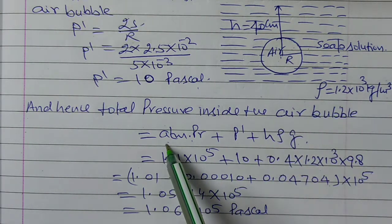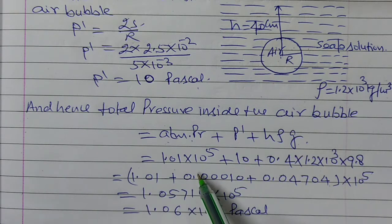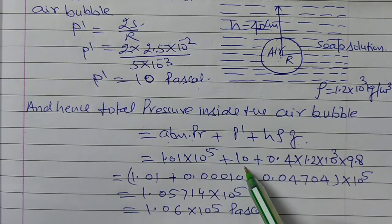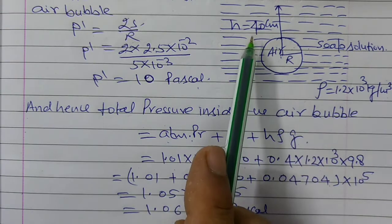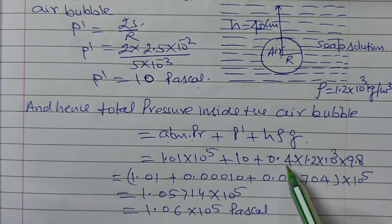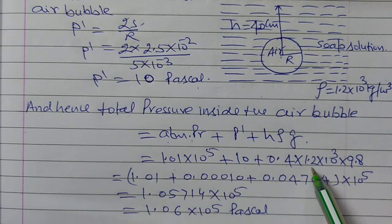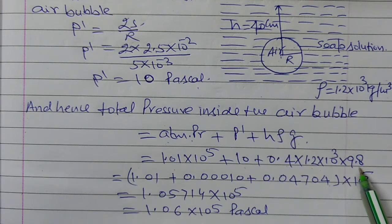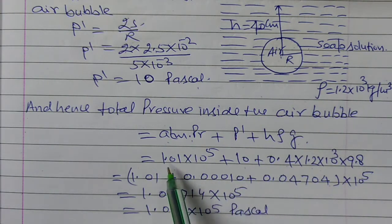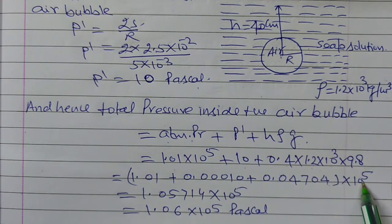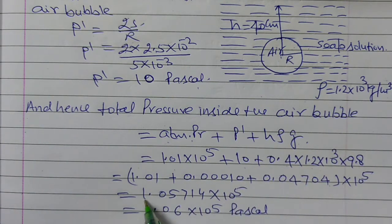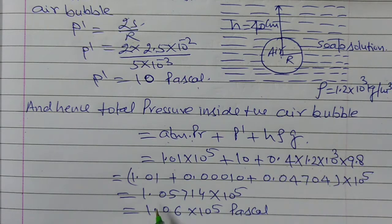Now putting the values: atmospheric pressure = 1.01×10⁵, excess pressure P' = 10, and h = 0.4 m (converted from 40 cm), density = 1.2×10³ kg/m³ (from relative density 1.2), and g = 9.8. Solving — taking 10⁵ as common — on adding all terms: 1.057... ≈ 1.06×10⁵ Pascal.